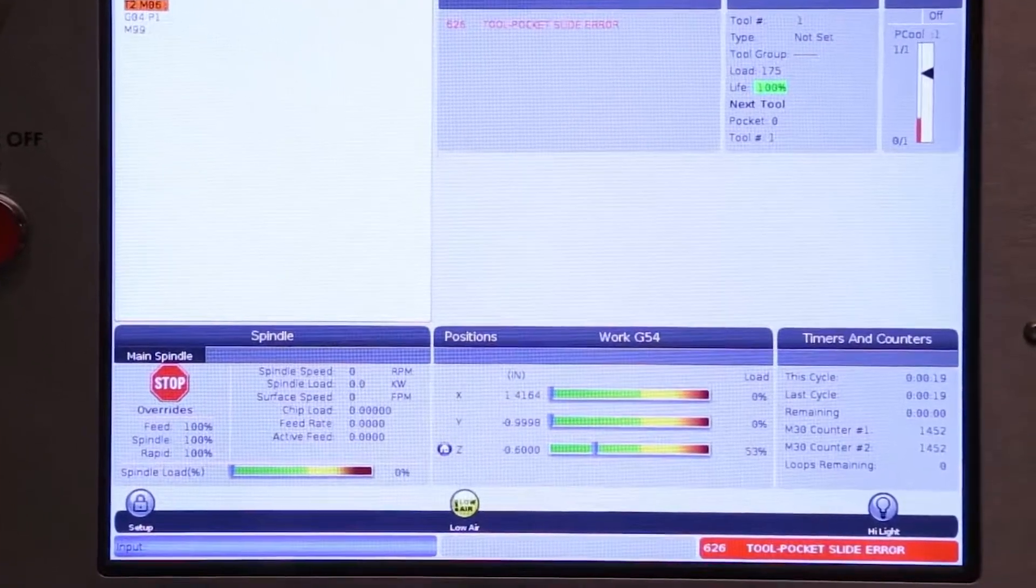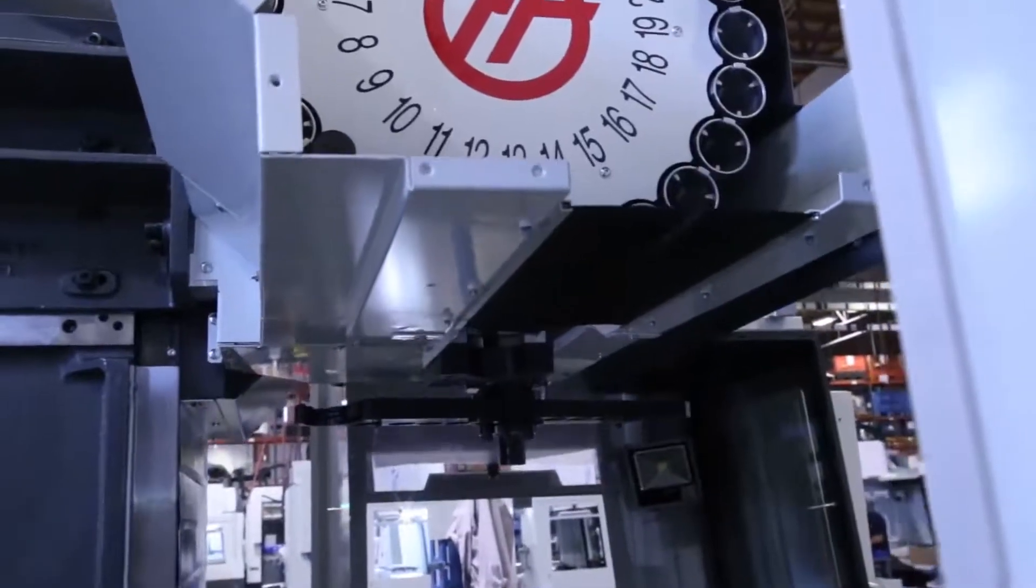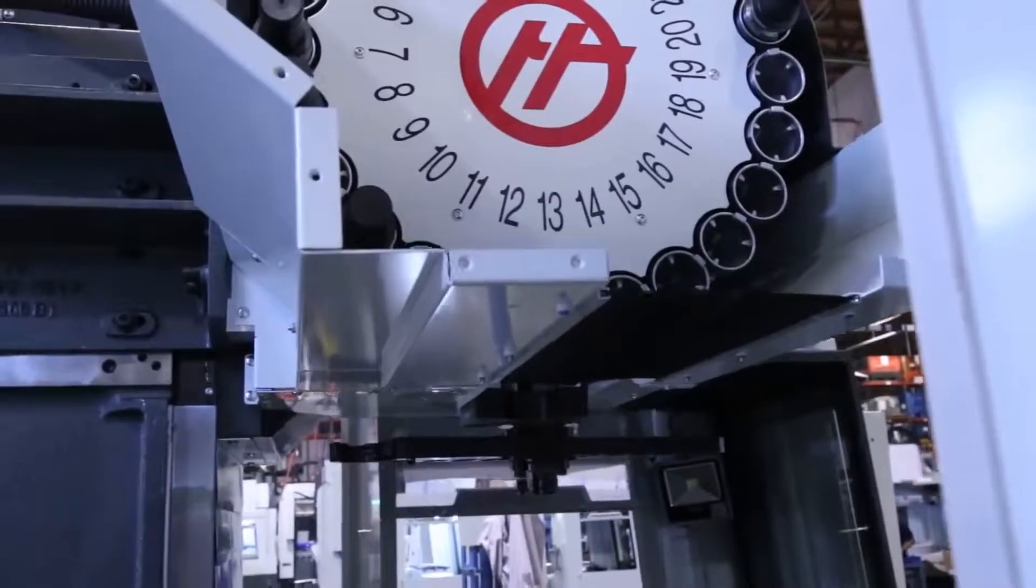If you're still getting alarm 626, follow these steps to troubleshoot the issue. First, give the pocket and carousel a good look for loose or damaged components.